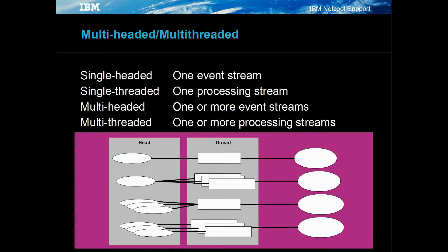The probes themselves have a number of features that improve performance. Single-headed probes process events serially from a serial event source. Single-threaded probes process events serially from a single event queue. Multi-headed probes read events from a number of event sources. Multi-threaded probes can process events on one or more threads, which improves processing speed when multiple CPUs are available.